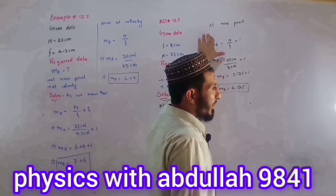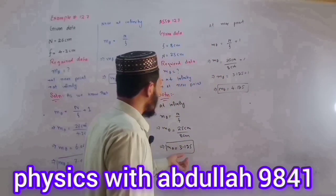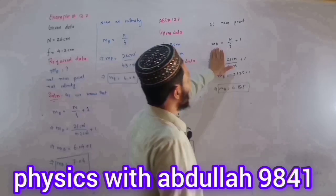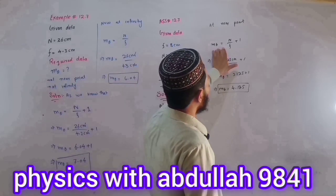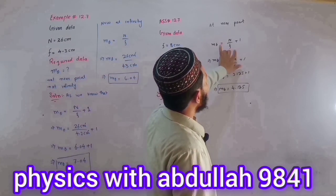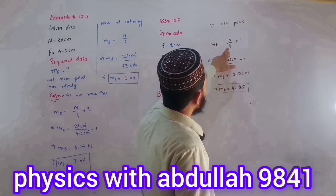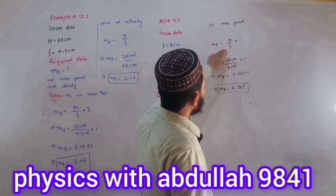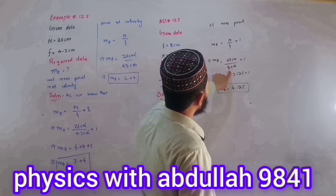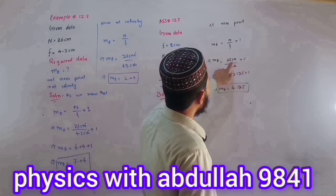For the near point case, m_theta equals n divided by f plus 1: 25 centimeters divided by 8 centimeters plus 1 equals 4.125.